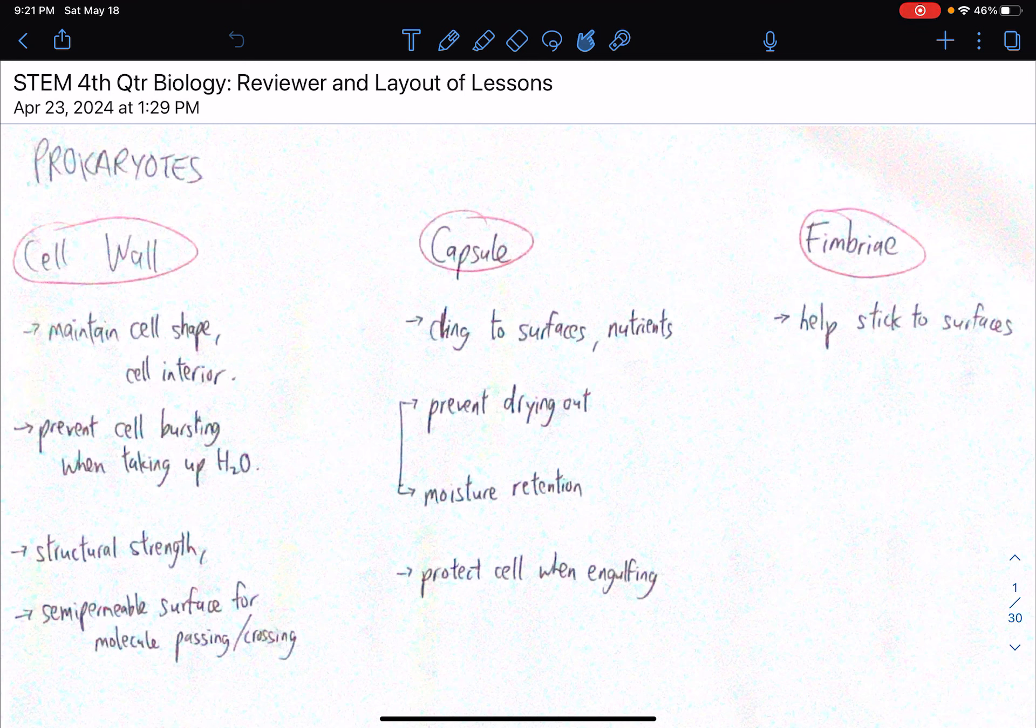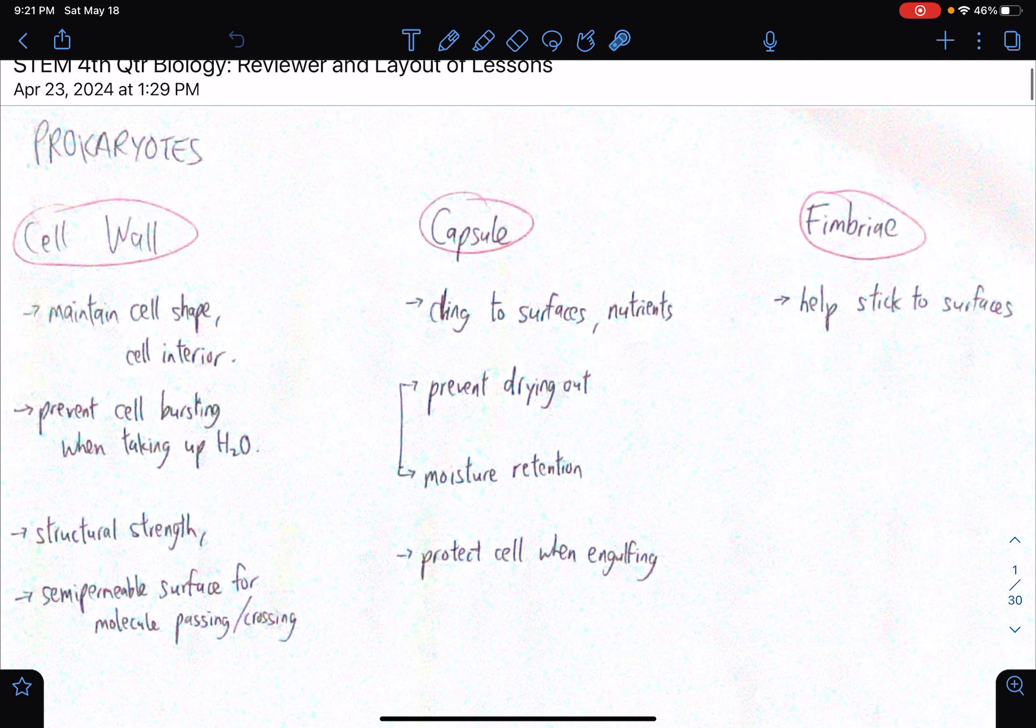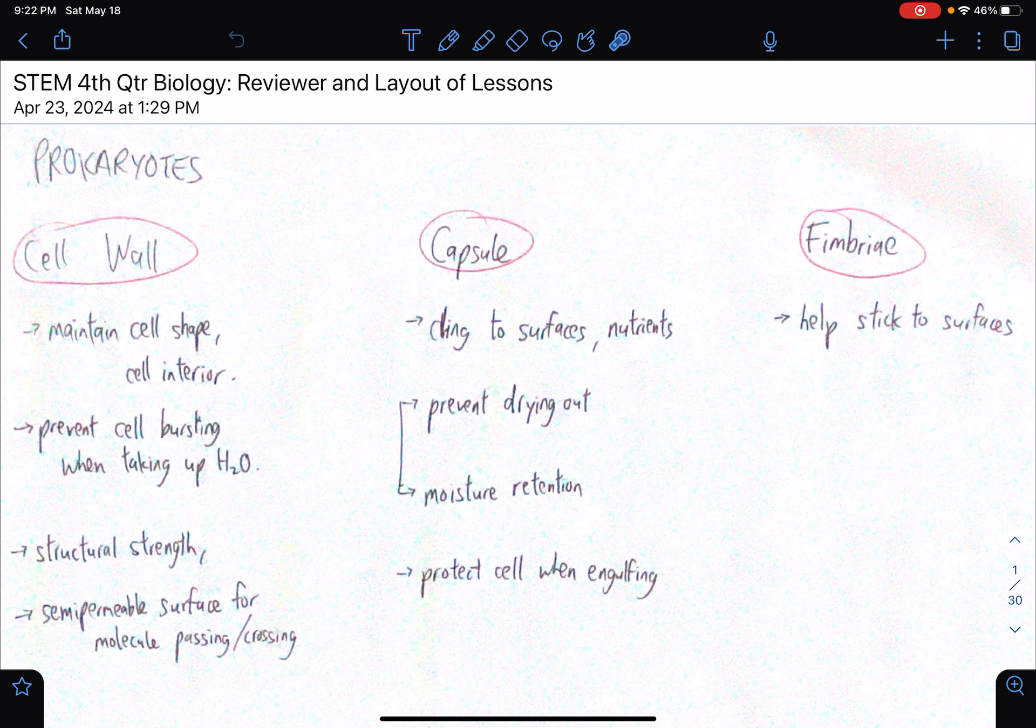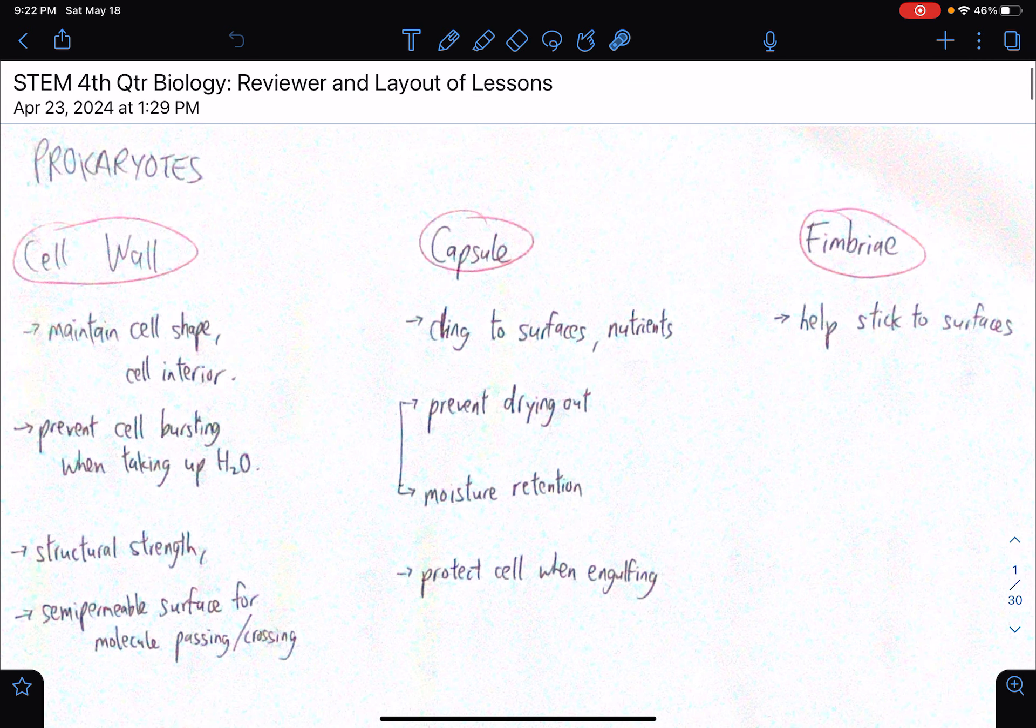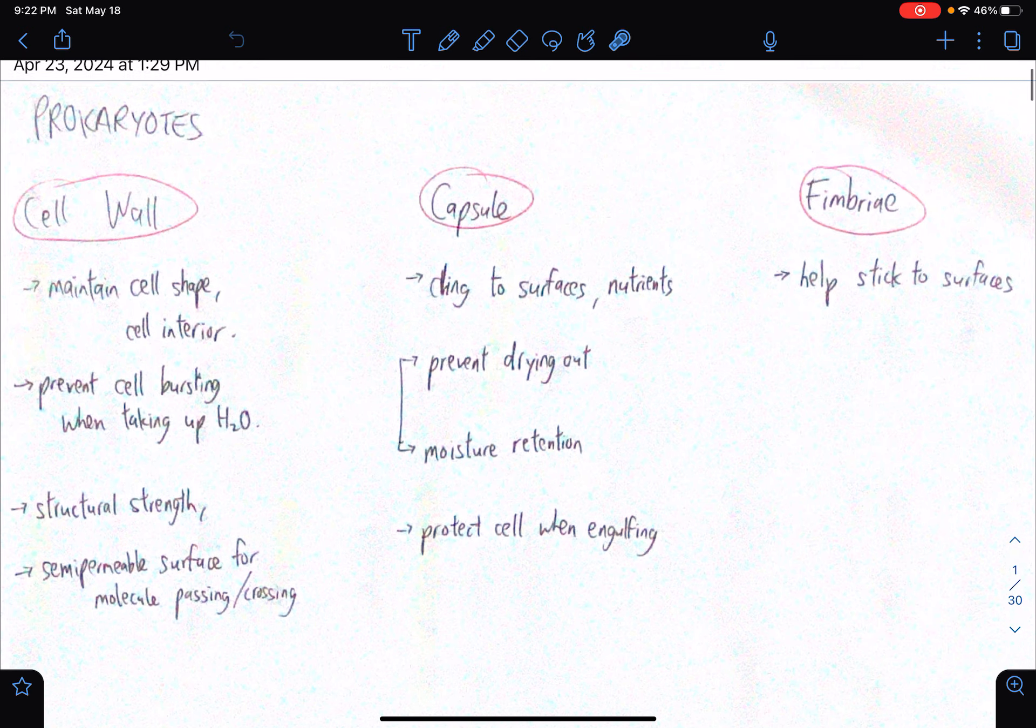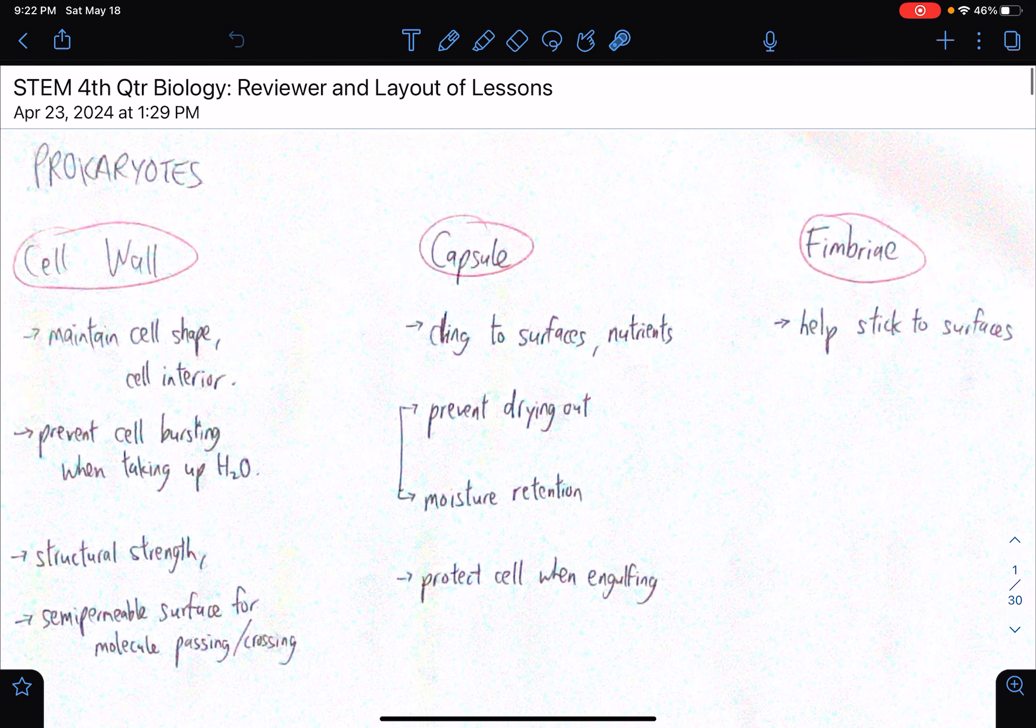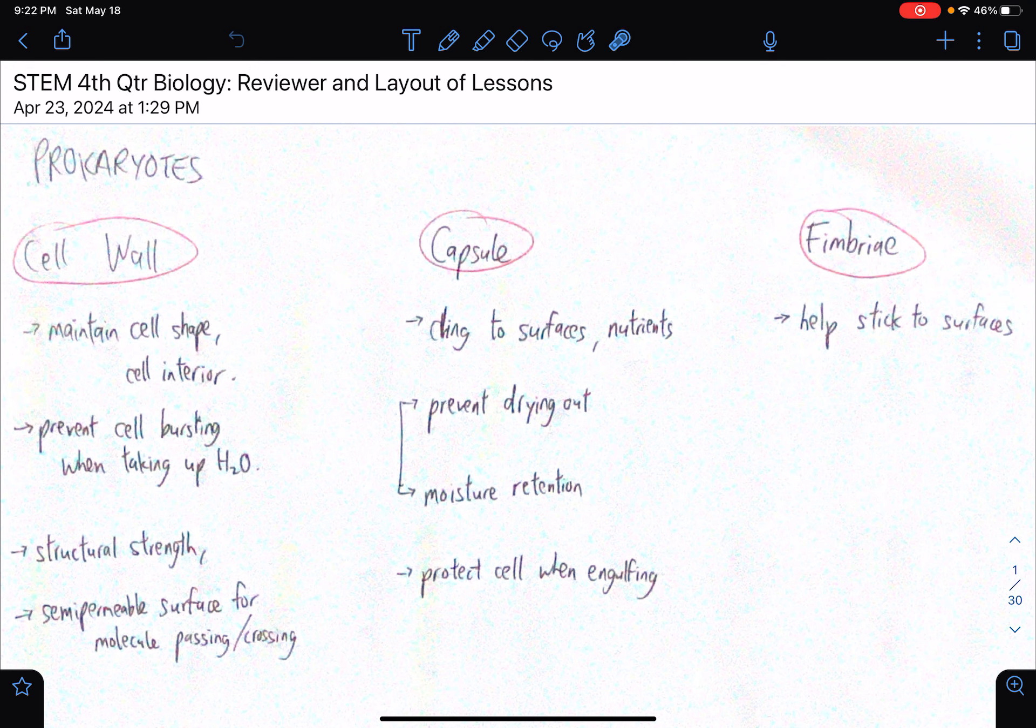In this video, we will be starting our series on grade 12 fourth quarter biology. At least in our school, this is everything that we have learned. They're all compiled in a single file of reviewer papers. But this is not complete yet. I still have to work on the vertebrates lesson. That's the last lesson, by the way. But so far, I already have everything else aside from that. Let's start.